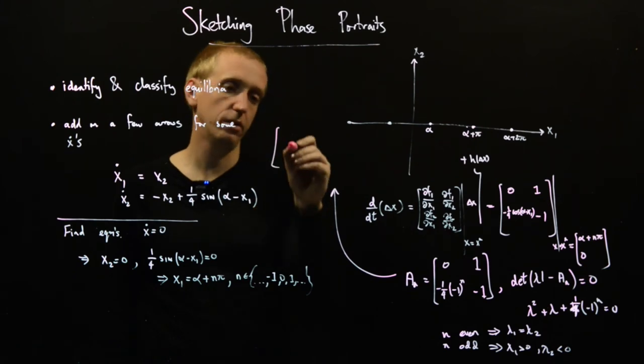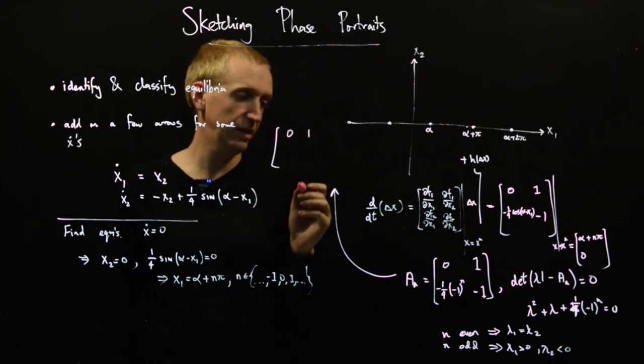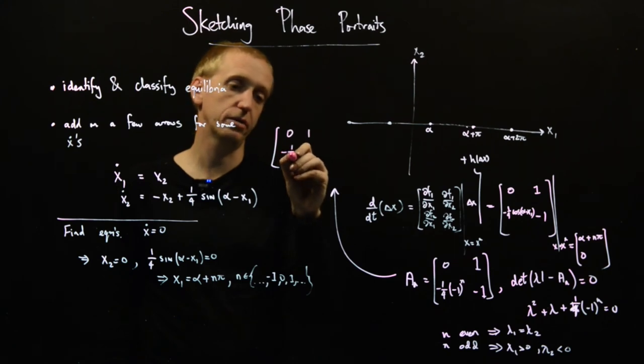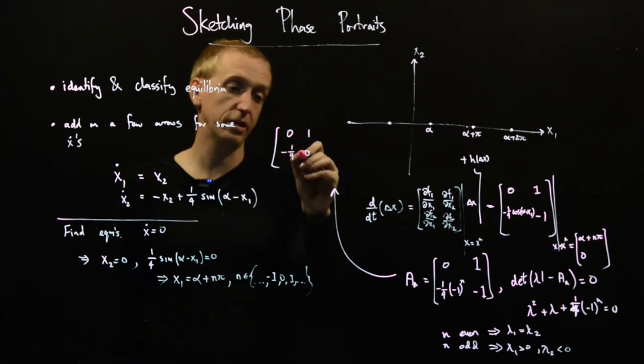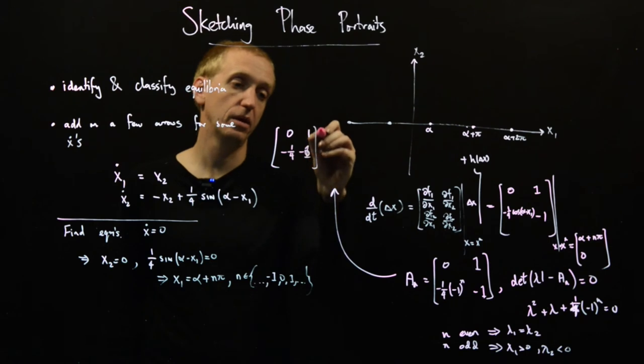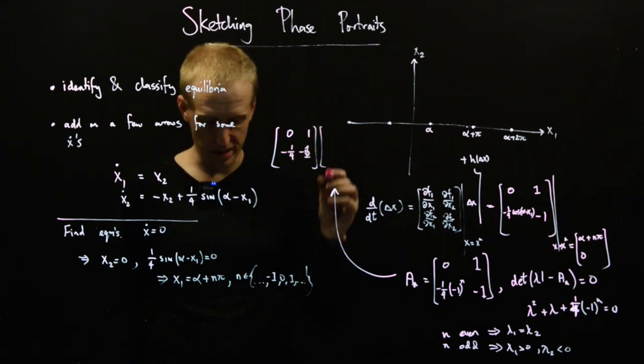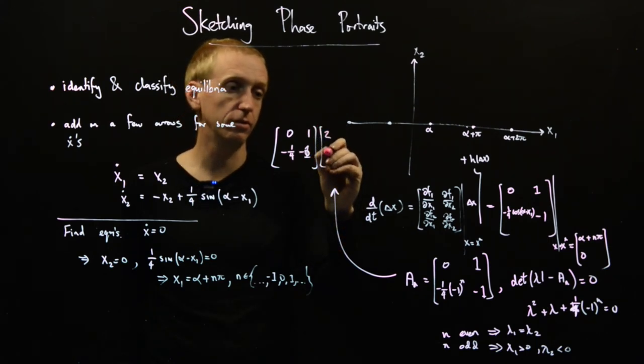So if we look, 0, 1, n is even. So we've just got minus a quarter and minus 1. And let's just guess for our eigenvector 2 with minus 1. I mean, you obviously know how to do this properly, so we're not going to go through the steps here.